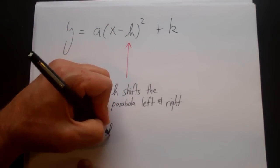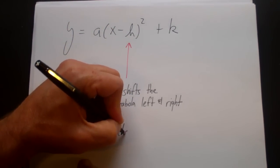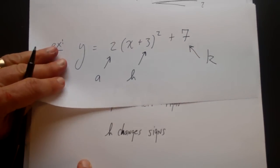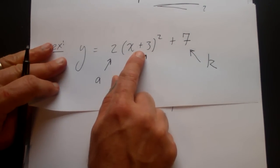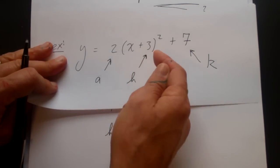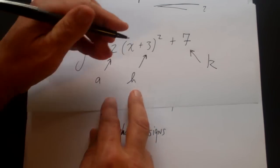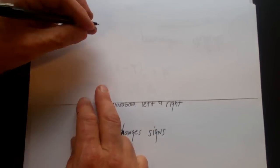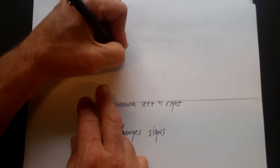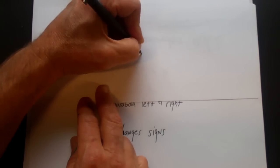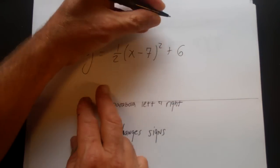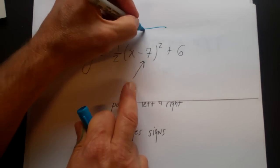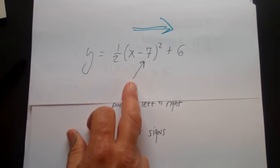The key is the h changes signs. In our example, we had a positive three, so it moves left and right but by a negative three — it moves in a negative direction because it's a positive number. Similarly, if you had y is equal to one half times x minus seven squared plus six, since that is a negative we change the sign, and that moves it in a positive direction — in this case, a positive seven.